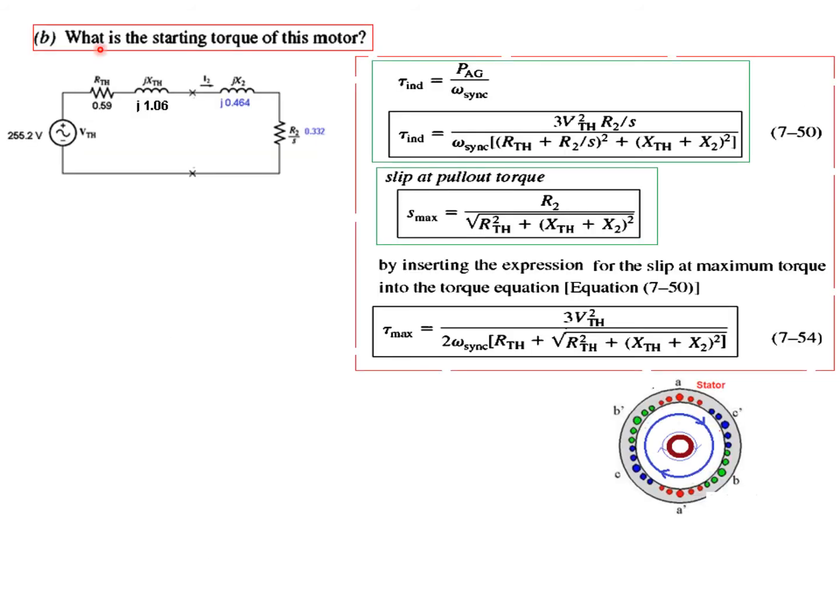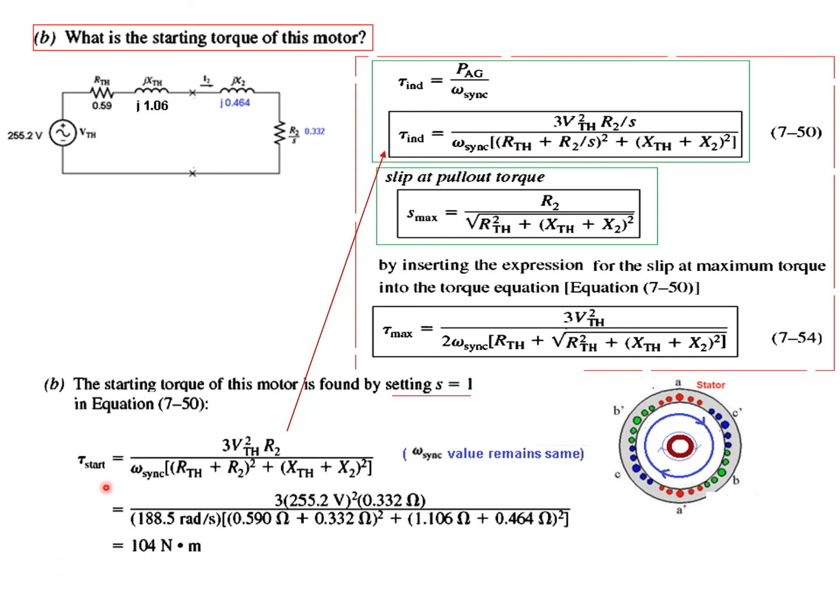The next question is: what is the starting torque of this motor? This is the formula we studied for the induced torque. Now for the starting torque, the concept is: the stator field is rotating at synchronous speed, the rotor is not rotating—it is not moving. Therefore there will be maximum slip between the two. The slip at the start will be 100 percent, meaning s equals 1. We plug in the value s equals 1 to get the starting torque equation.